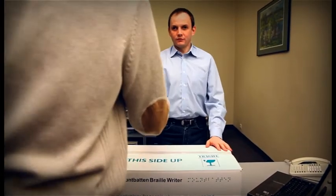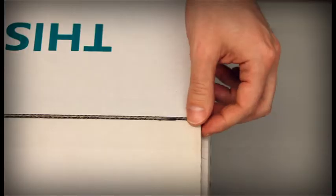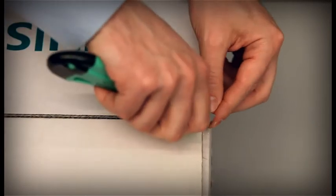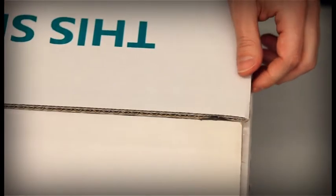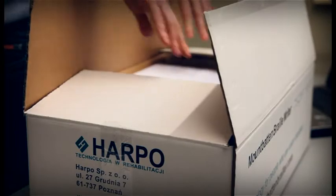Inside the outer carton, you will find the Mountbatten has been packed in a smaller carton with foam cutouts to support it inside the outer carton.